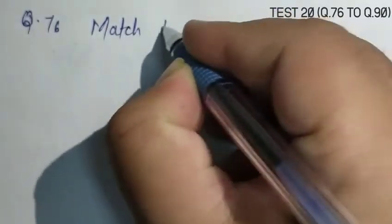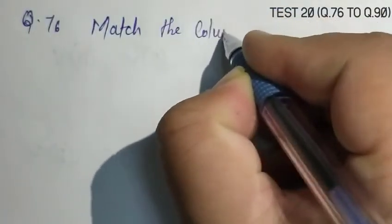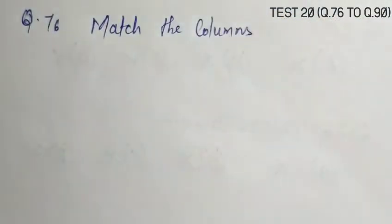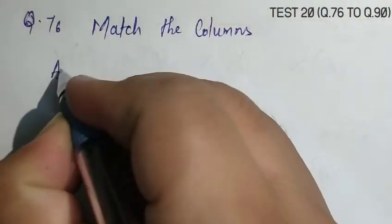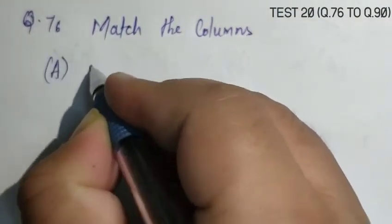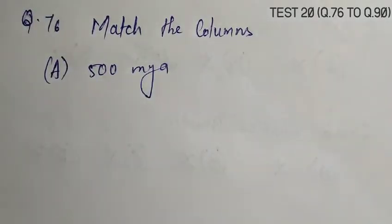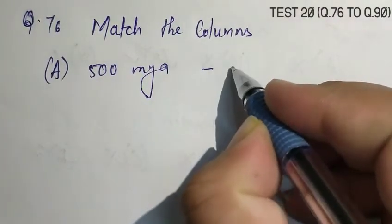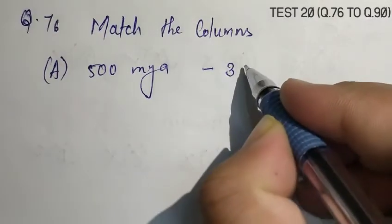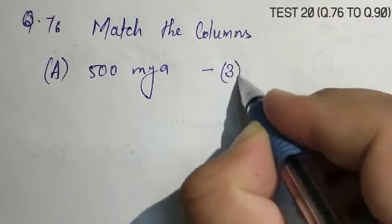Question number 76, match the following columns. Column 1, A: 500 million years ago, lead to the development of invertebrates, that is 3rd.